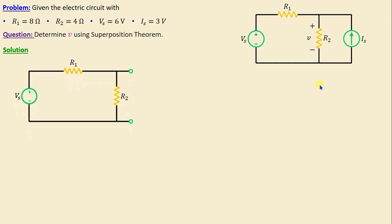The next step is to solve the circuit using conventional techniques in order to find the voltage VA across the resistor R2. We can apply the voltage division method.